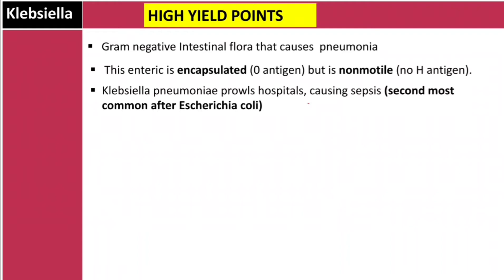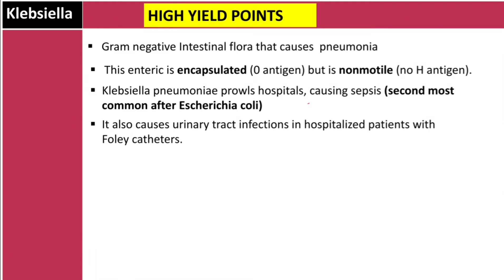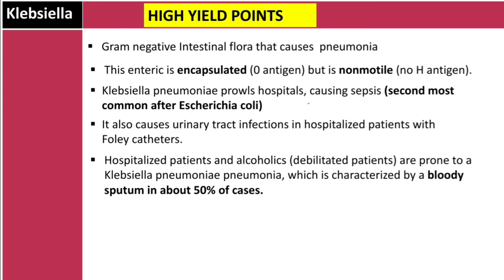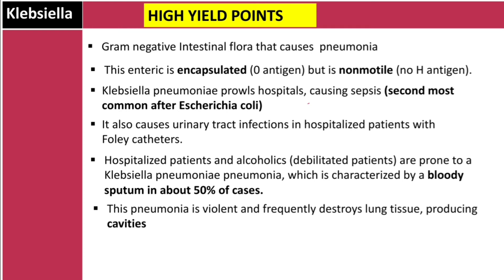Klebsiella also causes urinary tract infections in hospitalized patients with Foley catheters. The key at-risk populations are hospitalized patients and alcoholics — debilitated patients who are prone to Klebsiella pneumonia. Diabetics and alcoholics are specifically associated with Klebsiella. This pneumonia is violent and frequently destroys lung tissue, producing cavities and abscesses.